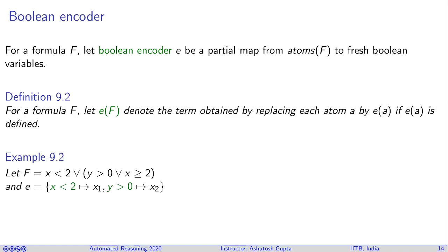Let's say we map this atom to x1 and this atom to x2. When we do the Boolean encoding, the Boolean encoding of F is x1 or x2, which is this atom, and not x1, the negation of x1.